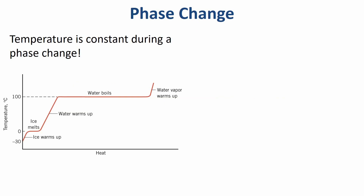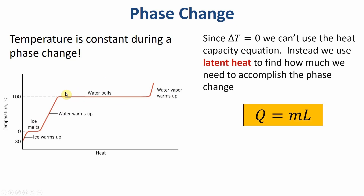If I heat something up too much, I'm going to cause a phase change — going from a solid heated until it melts and becomes liquid, or from a liquid until it becomes a gas. During that phase change, while ice is melting or water is boiling, the temperature is constant. I'm adding heat to make the phase change happen, but it happens at a constant T. Since delta T equals zero, we can't use our heat capacity equation; we have to use something else. We call this latent heat: how much heat is required to make a phase change happen? Q equals M times L, where L is the latent heat constant you can look up. To know how much heat is needed to boil water, look up L for water, multiply by the mass, and you're good to go.